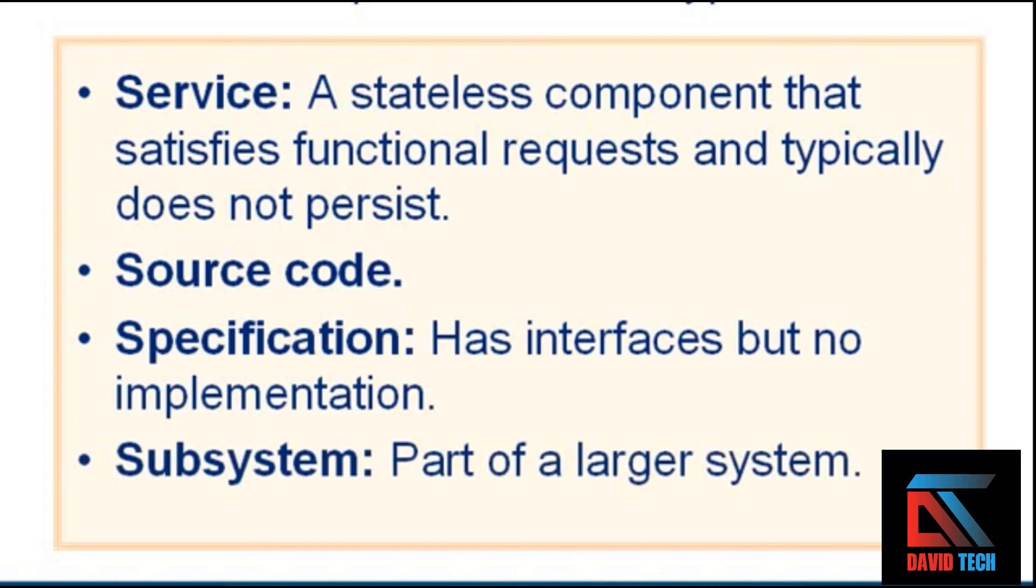Subsystem is part of a larger system. A subsystem is self-contained and usually bigger than a simple component. For example, a subsystem might be a component that contains several other components. So the best way to think of a subsystem is it's like a component, only bigger, a bigger piece of the system.